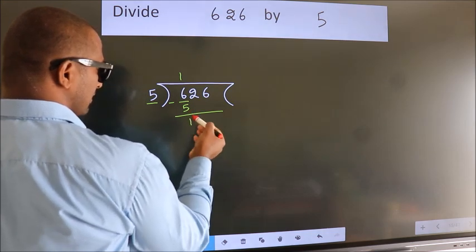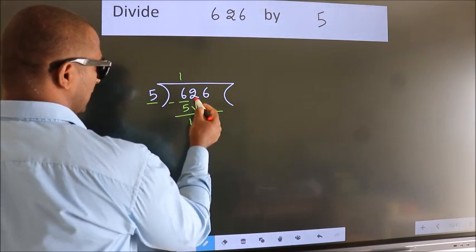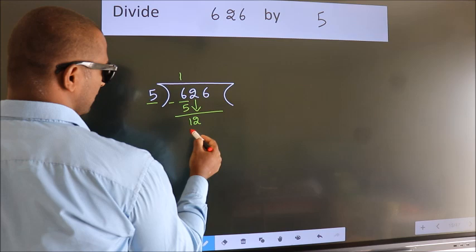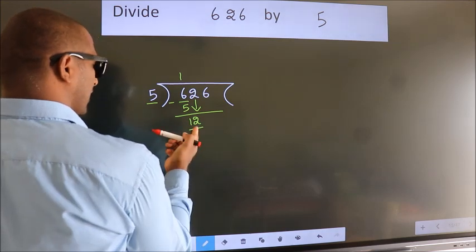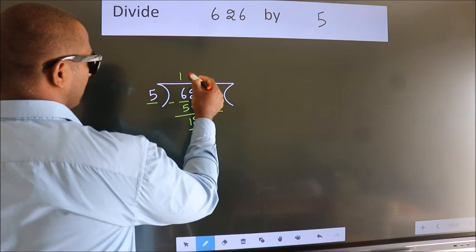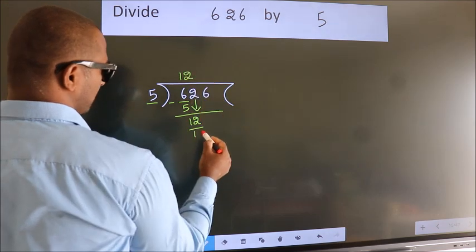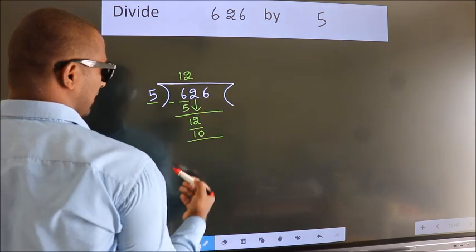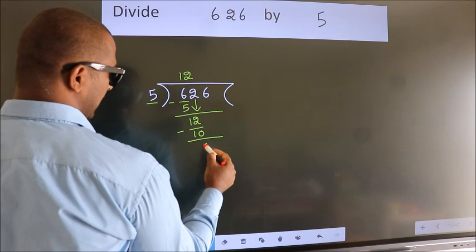After this, bring down the beside number. So, 2 down. So, 12. A number close to 12 in 5 table is 5 twos 10. Now, we subtract. We get 2.